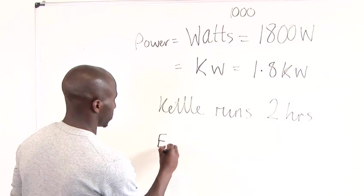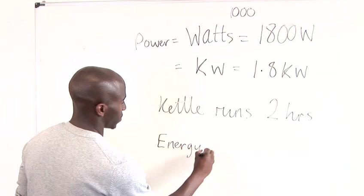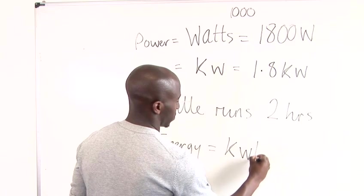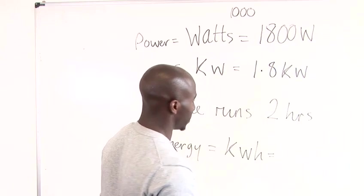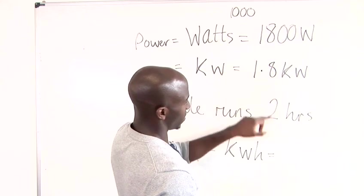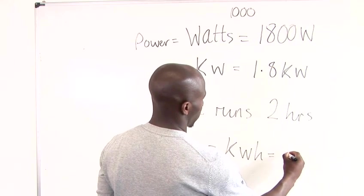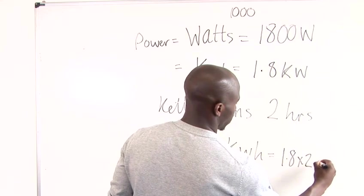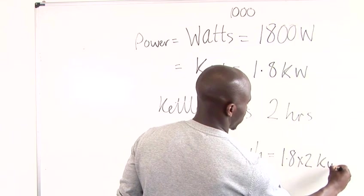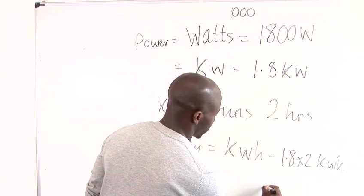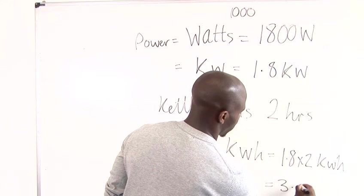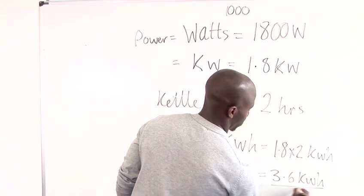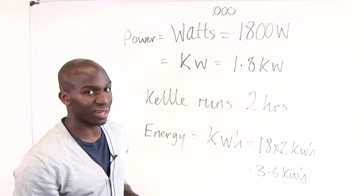Energy in kilowatt hours is basically a multiplication of this by this. You would have 1.8 times 2 kilowatt hours, and that's basically just 3.6 kWh. And that's how to calculate kilowatt hours.